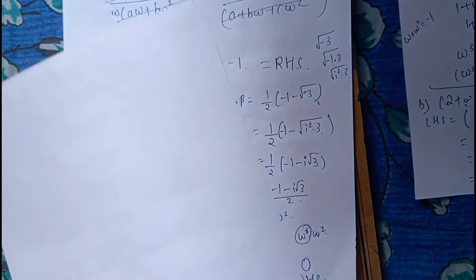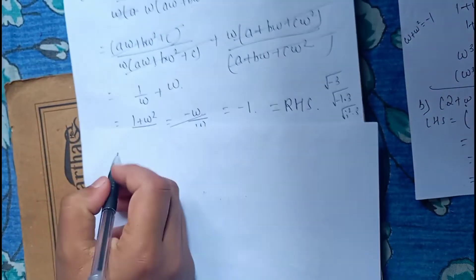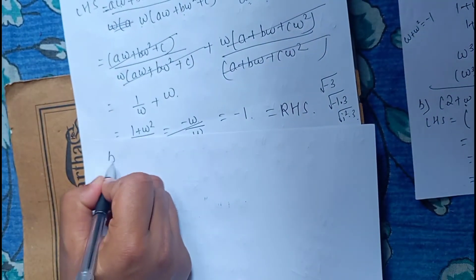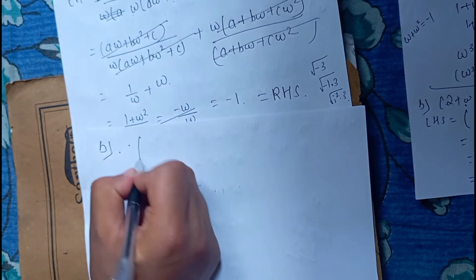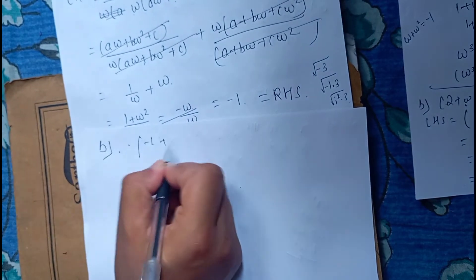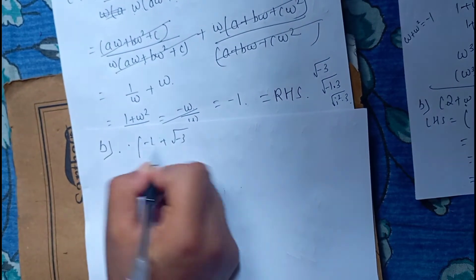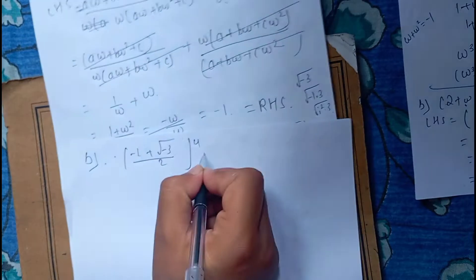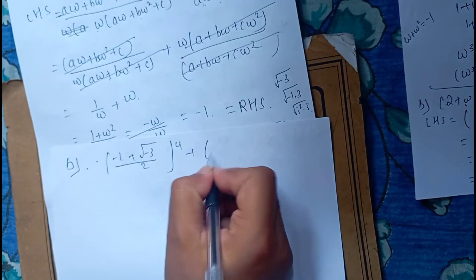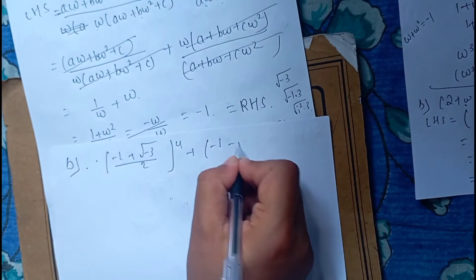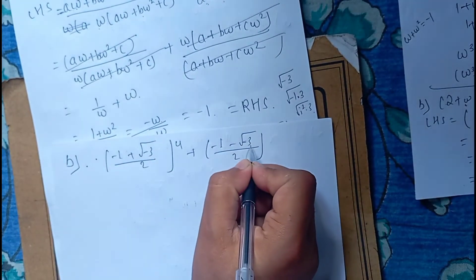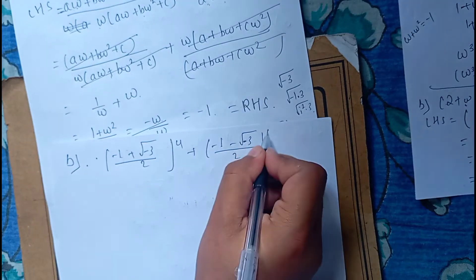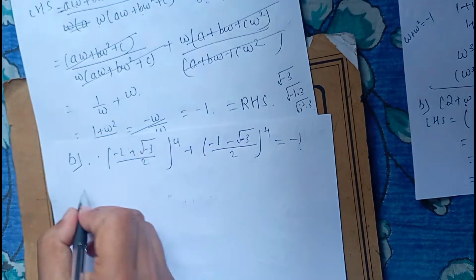We are going to do part b. Part b means: minus 1 plus minus 3 by 2 bar to the power 4, plus minus 1 minus by 2 bar to the power 4, is equal to minus 1.